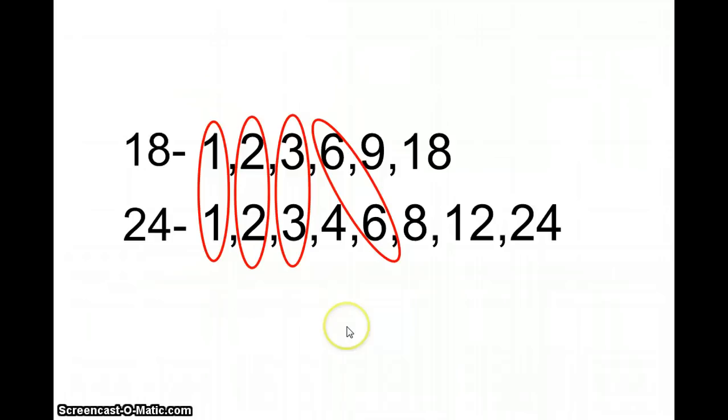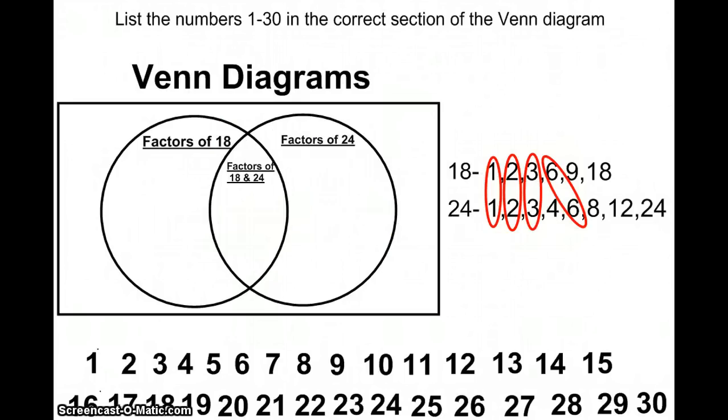Now there are no other numbers that are common, which means appear in both lists. So now I'm going to take this information back to my Venn diagram to help me correctly place the numbers 1 through 30.